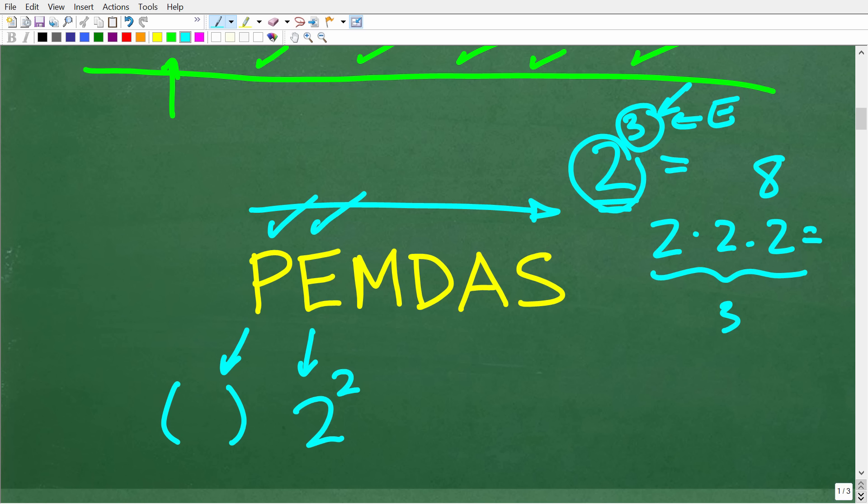Okay, so we have M, D, A, and S. Let me go ahead and tell you what these stand for. So M stands for multiplication, D stands for division, A stands for addition, and S stands for subtraction.